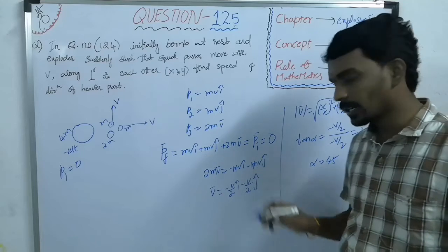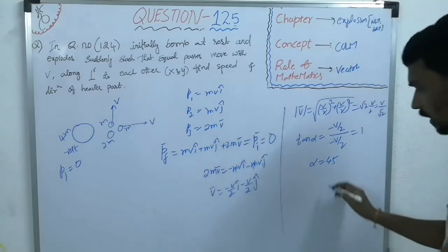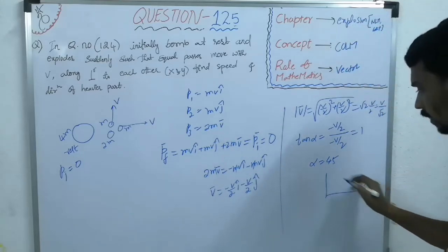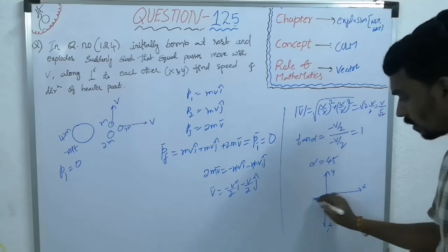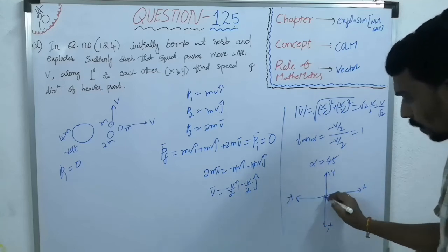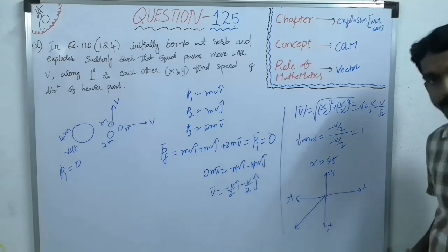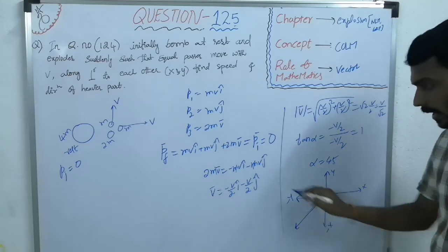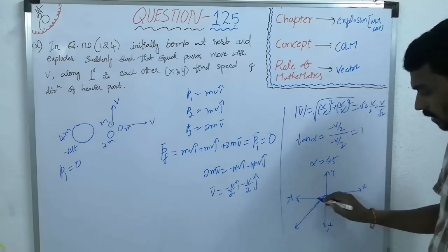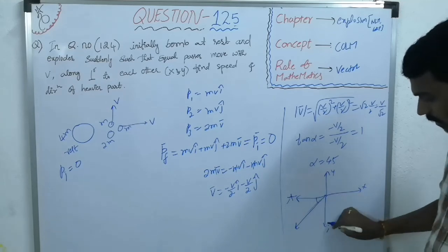minus i cap minus j cap. So, negative x axis and negative y axis. So, this is negative x, this is negative y. So, the particle will move between negative x and y at an angle 45 degrees with x axis.